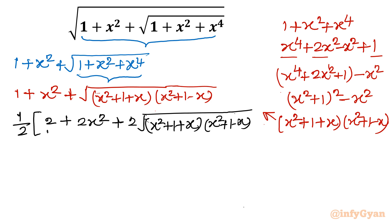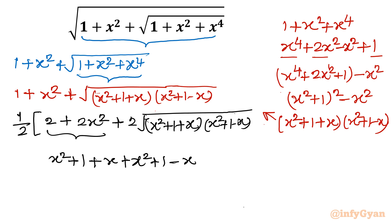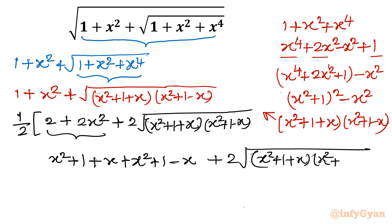Now I will rewrite this term. I write x square plus 1 and x square plus 1, splitting 2x square plus 2 in this form. Then I write plus x and plus x, then minus x. I added and subtracted x — the rest is as it is — times 2 times square root of (x square plus 1 plus x)(x square plus 1 minus x). And the half factor is as it is.